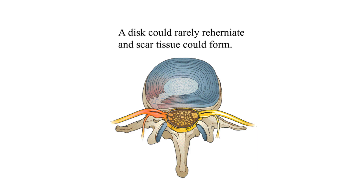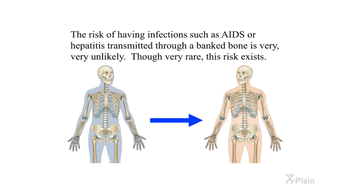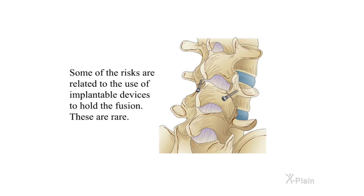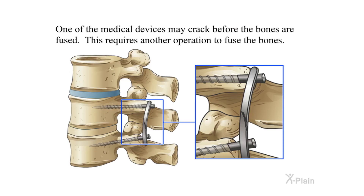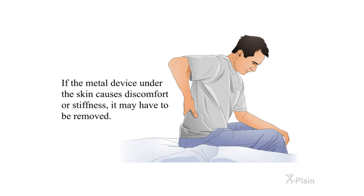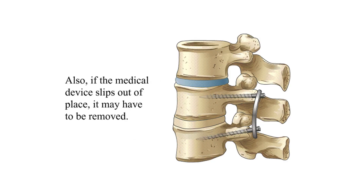A disc could rarely reherniate and scar tissue could form. The risk of having infections such as AIDS or hepatitis transmitted through a banked bone is very, very unlikely, though this very rare risk exists. Some of the risks are related to the use of implantable devices to hold the fusion. One of the medical devices may crack before the bones are fused, requiring another operation. If the metal device under the skin causes discomfort or stiffness, or if the device slips out of place, it may have to be removed.